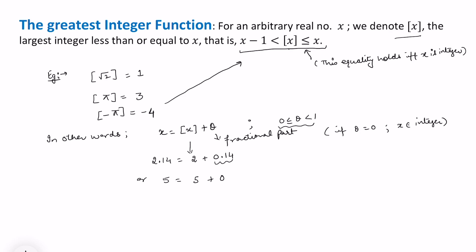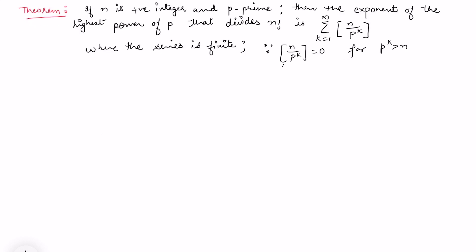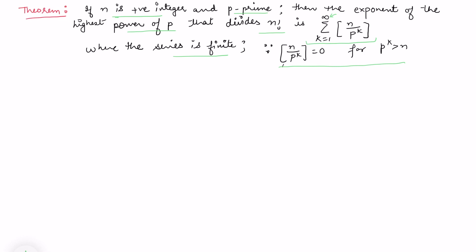The greatest integer function has many applications, and we are going to discuss a few in terms of divisibility. The theorem states: if n is a positive integer and p is a prime number, then the exponent of the highest power of p that divides n factorial is given by the summation from k equals 1 to infinity of the greatest integer of n over p to the power k. The series is finite because once p to the power k exceeds n, the greatest integer becomes 0.